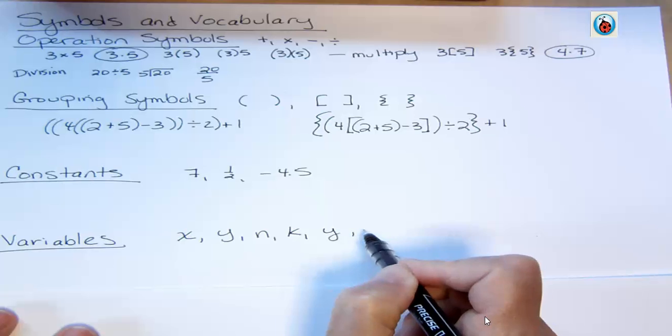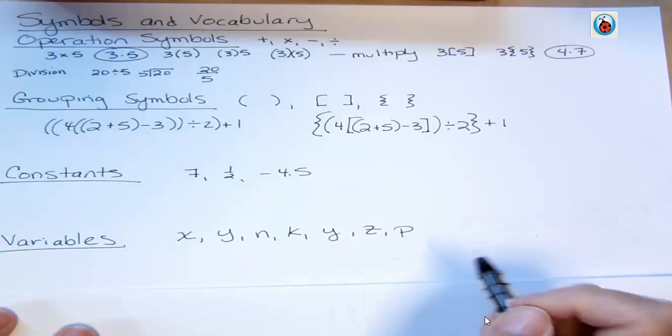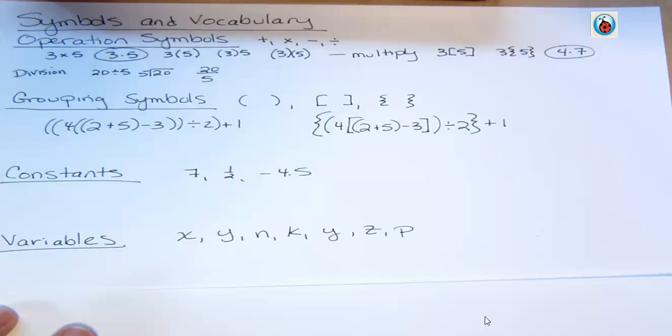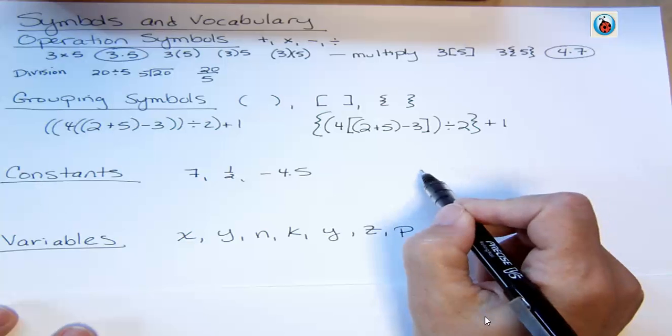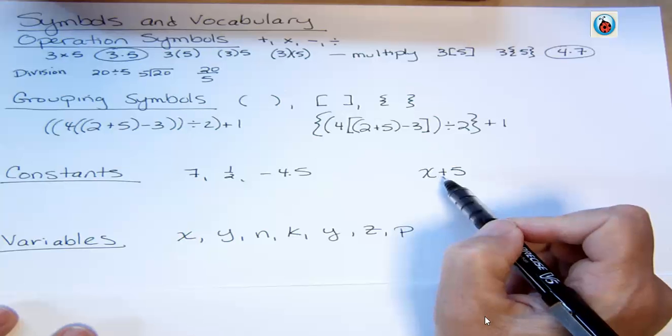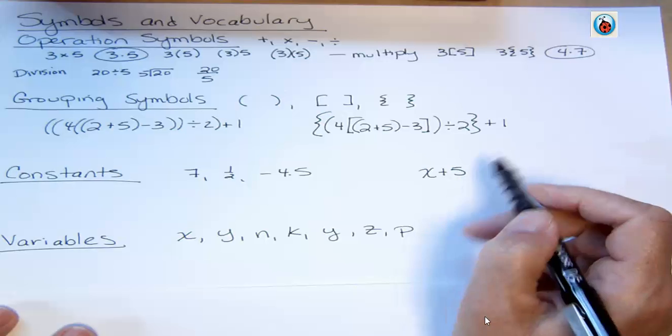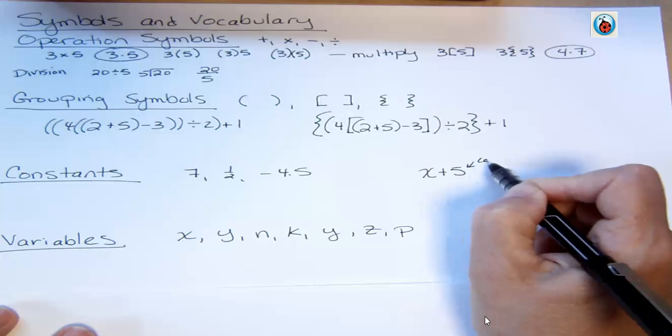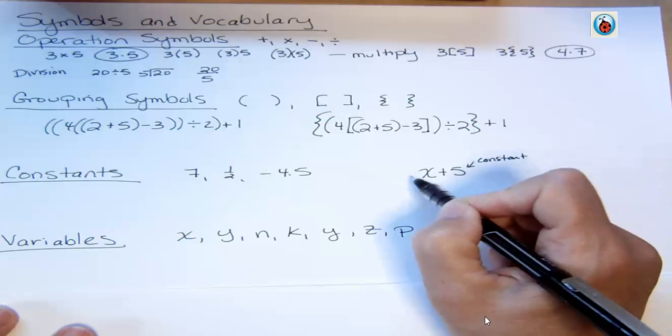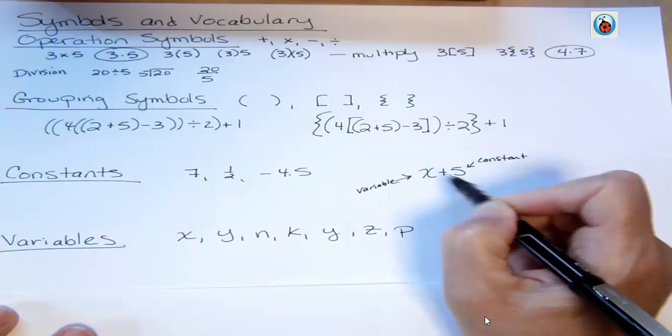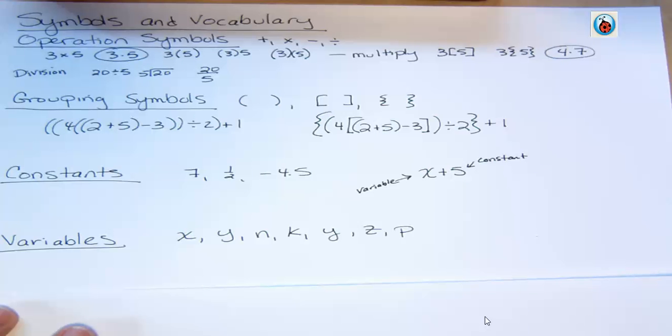Any letter that you want. Of course, you don't want to use as your variable O because that looks like 0. That would be confusing. So if I have something like this, X plus 5, I have an operation symbol. That's the plus. I have a variable. That's the X. And I have a constant term. That's the 5. So this is a constant, this is the variable, and the plus is the operation. So we have an expression. Expression has variables and constants and symbols in it. And it's important to know the vocabulary of those variables.